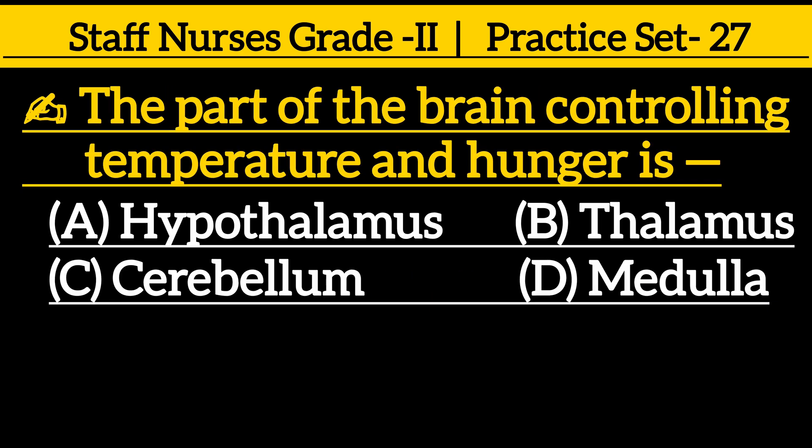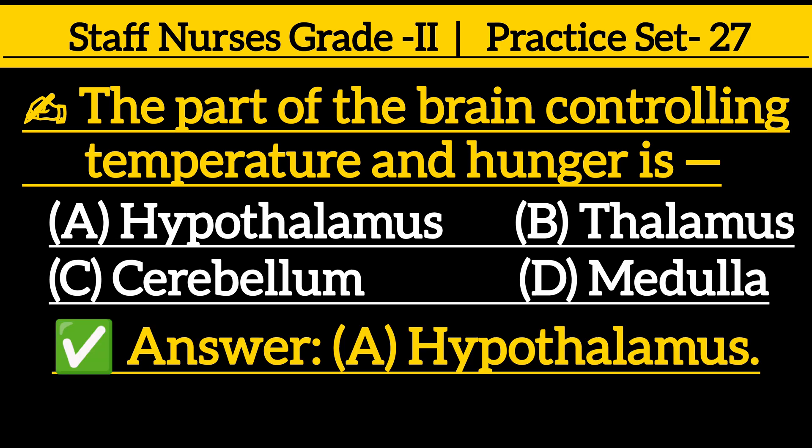Next one: the part of the brain controlling temperature and hunger is — option A: Hypothalamus, option B: Thalamus, option C: Cerebellum, option D: Medulla. Correct answer is option A: Hypothalamus.